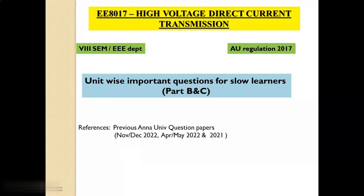Good evening to all. EE8017 HVDC Transmission, i.e. High Voltage Direct Current Transmission, is a subject given for 8th semester EEE students under Anna University Regulation 2017. In this video lecture, we are going to know unit-wise important questions for slow learners. It covers both Part B and Part C. These unit-wise important questions are prepared with the help of previous Anna University question papers.